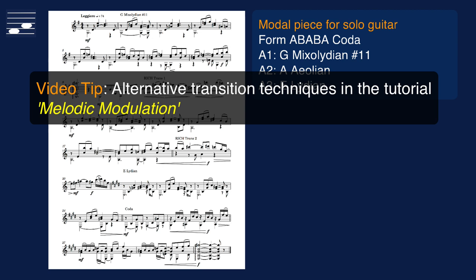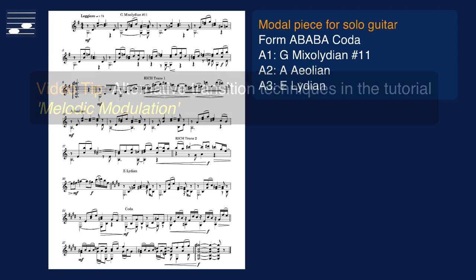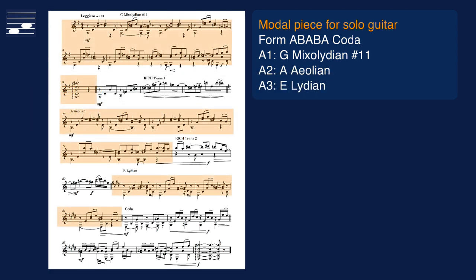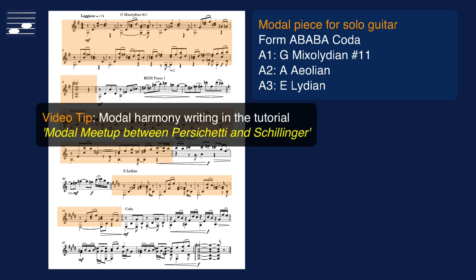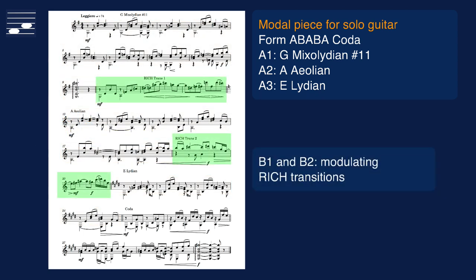You may want to watch my tutorial on melodic modulation that contains three alternative techniques for connecting sections. The form of this guitar piece shows three A sections, two transitions and a coda. Each A section is in a different mode. And there is a tutorial video on how to best write modal triadic harmony. The B sections are the modulating transitions that use the two RI chains. Read along with the annotated score.